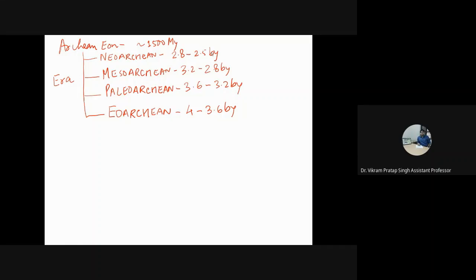These time periods are characterized by the formation of several proto-continents. If you look at the Earth's history, the Earth was not always in the form we see today — it has evolved over the last 4 billion years. The Archean eon is characterized by the formation of sialic proto-continents, which is an important point.